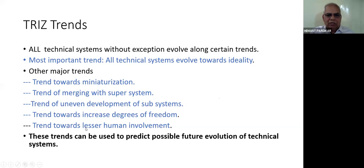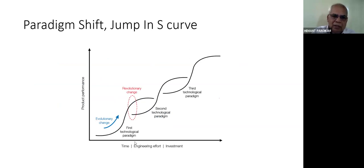Likewise it has gone to ideality. Every technical system need not go to ideality, but the trend is always there. Other major trends: trend towards miniaturization, trends of merging with super system, trends of uneven development of subsystem, trend towards increased degree of freedom, trend towards lesser human involvement. These trends can be used to predict possible future evolution of technical systems. We cannot say when the trend will change, but what are the possible ways it will change. There are nine major trends in all. If there is a technical system which is already mature on a certain trend, there's no point working on it. We need to work on certain areas which have evolutionary potential.